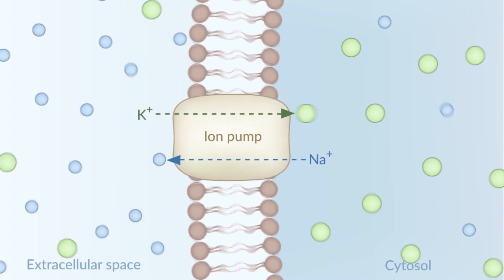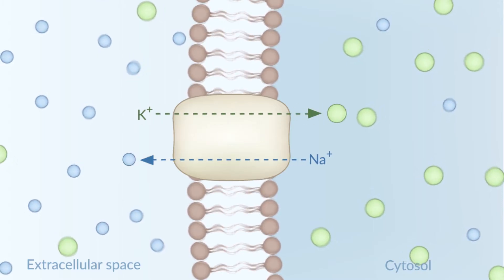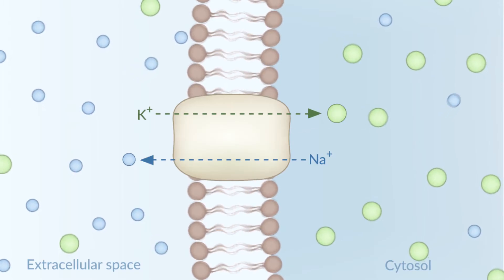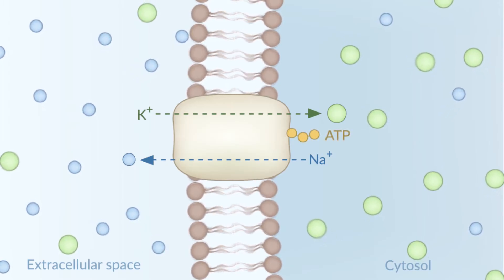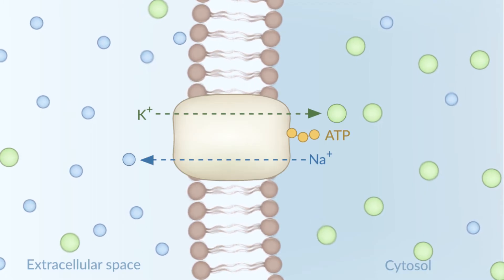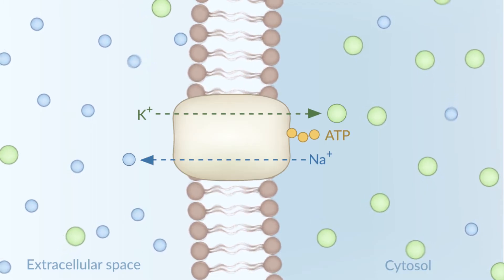It's an ion pump which functions by working against a concentration gradient and requires a direct energy source. This gives rise to the alternate name for this type of transport, primary active transport.